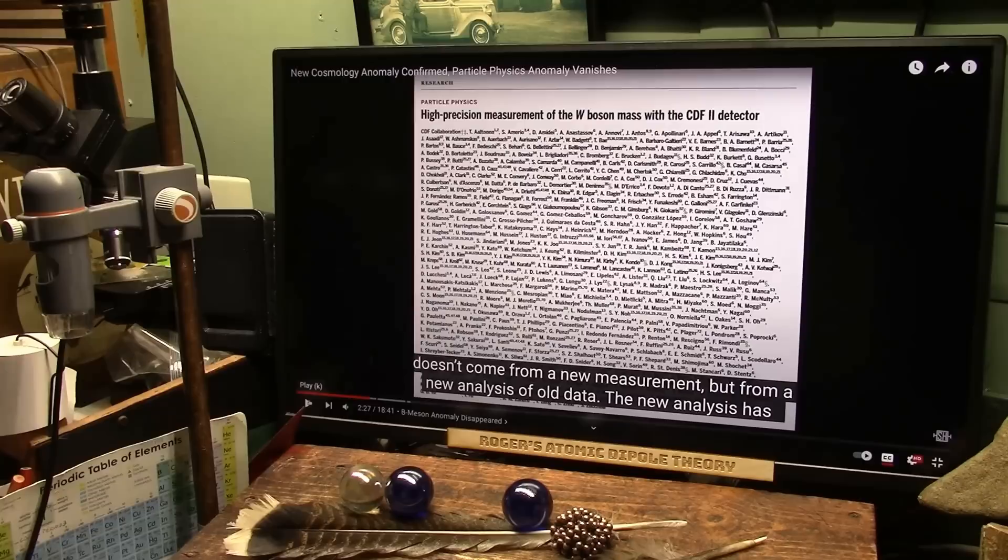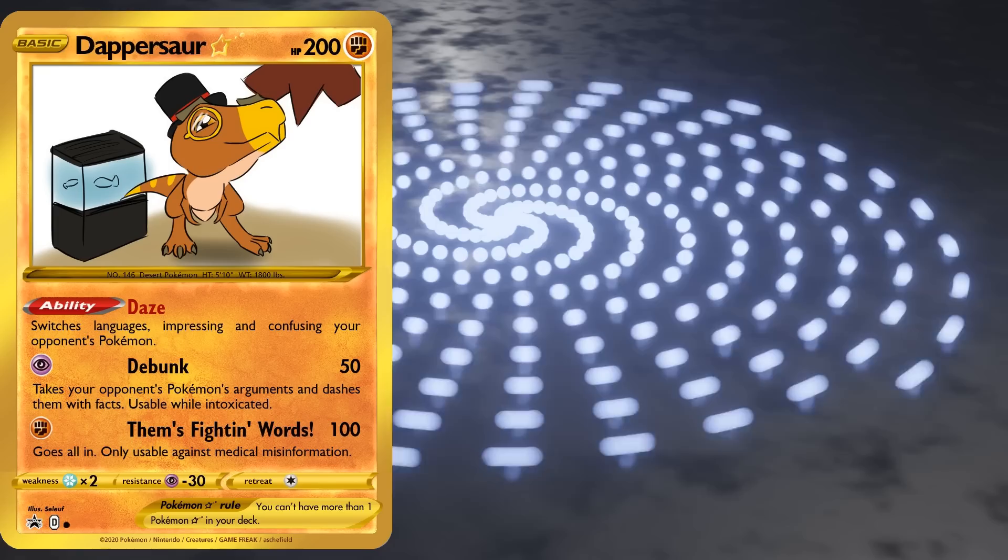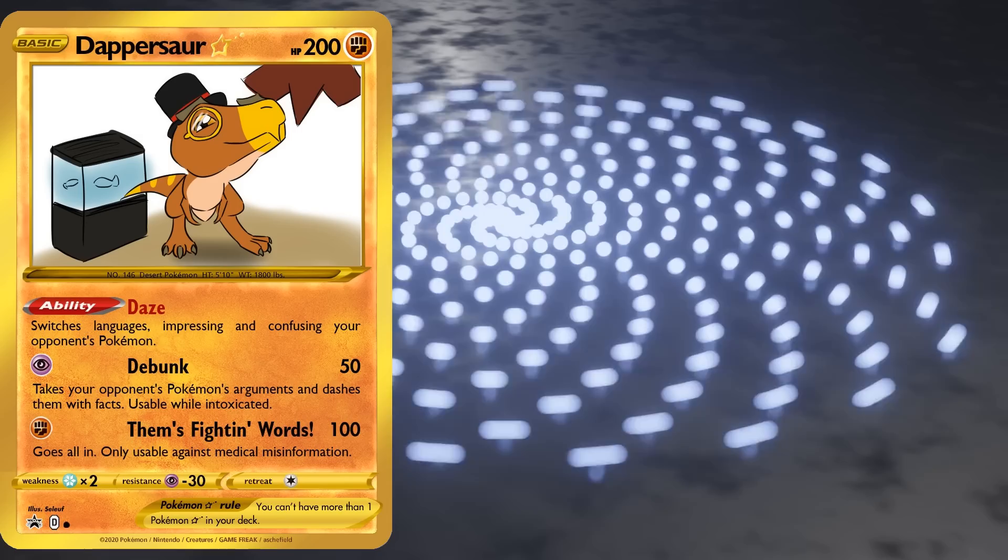I talked about this in more detail in an earlier video. In this case, the anomaly doesn't come from a new measurement, but from a new analysis of old data. This is the key. Nowhere in the world would anybody look at this and come up with a conclusion. That's why they keep changing, changing, changing. Yeah, imagine that. Scientists changing their ideas when their ideas don't fit experiment.